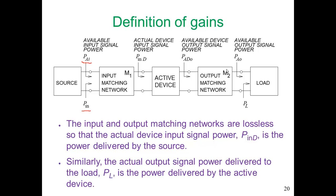If we move to the load, there's an available output power that comes out of the matching network, but that may not be the same as the power that's actually delivered to the load. A true definition of gain for our final design amplifier is the power delivered to the load divided by the power available from the input source. Different definitions of gain are used at different stages of the design process, before we've designed the output or input matching networks.